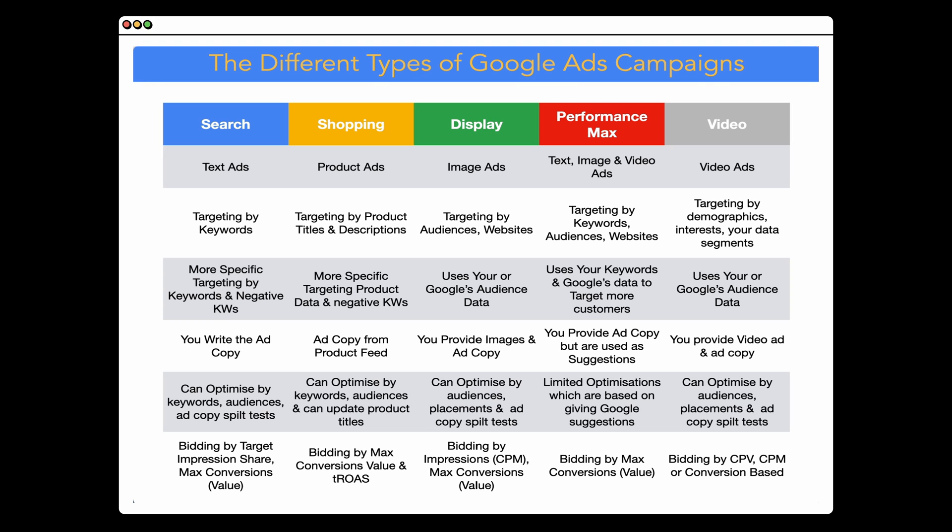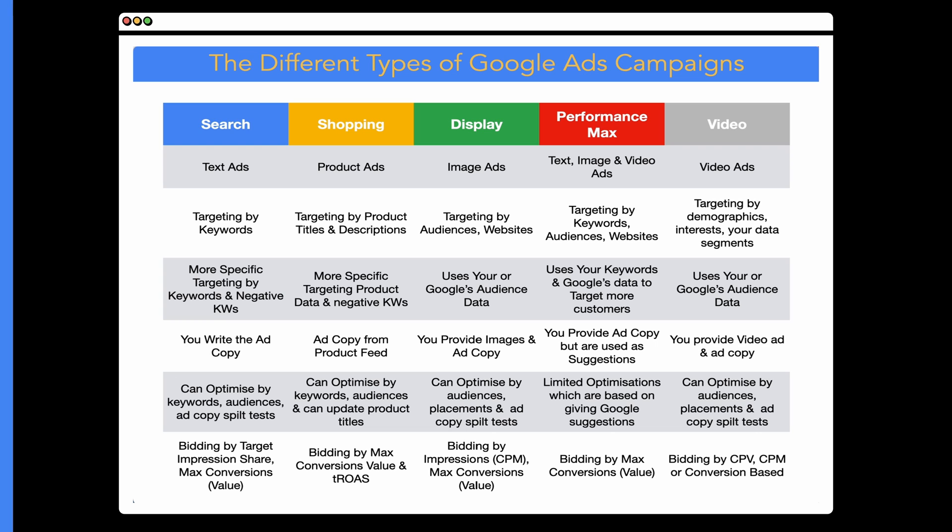Finally, here are some of the different bidding options. For Search, you've got a whole range, with the main ones being Target Impression Share and Maximize Conversions or Maximize Conversion Value. For Shopping, you can start with Max Clicks or a CPC target, then move to Maximize Conversion Value and add a Target ROAS. For Display, it's mainly impression-based, but you can use Maximize Conversions once you have enough data. Performance Max defaults to Maximize Conversions or Maximize Conversion Value, with optional Target ROAS or Target CPA. For Video, you can do conversion-based bidding, Cost Per View, or Cost Per Thousand Impressions (CPM).